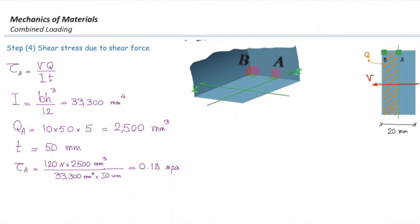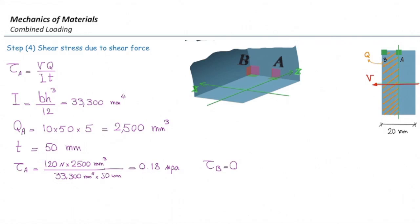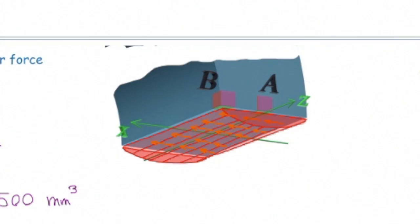For point B, I, T, and V are the same. However, Q is zero at point B because cutting vertically through point B gives zero area, and therefore Q = 0. So τ at B = 0. Note that shear stress is maximum at the centroid and zero on the left and right edges of the section — this is what we learned before.